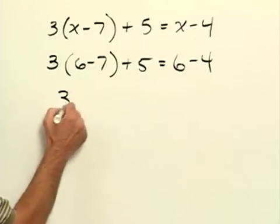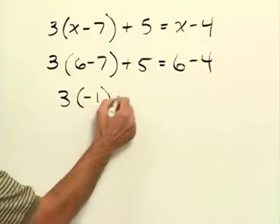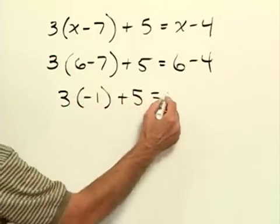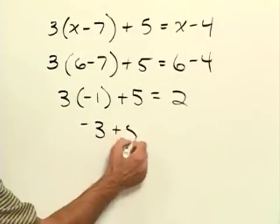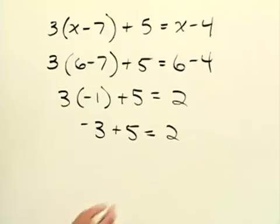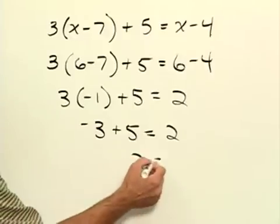So we'll have 3 times negative 1 plus 5 equals 2. And continuing on we'll have negative 3 plus 5 equals 2. And the last step we have 2 is equal to 2.